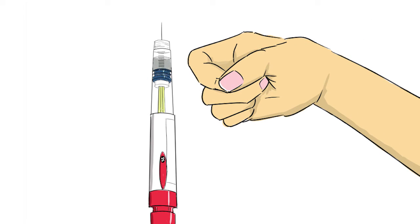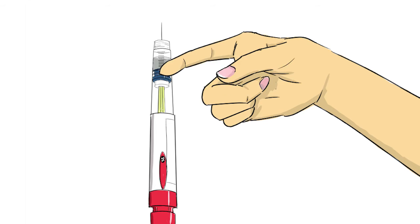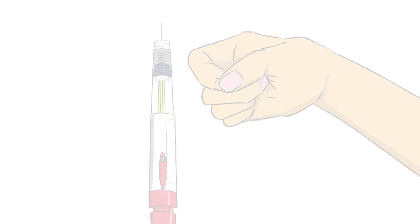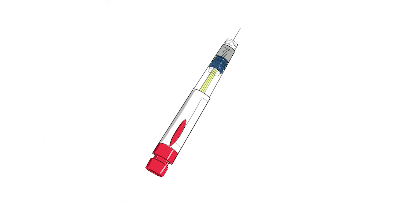With the needle pointed up, tap the top of the pen with your finger until the large air bubbles rise to the top. Once this occurs, slowly press the dose knob as far as it can go, then release.